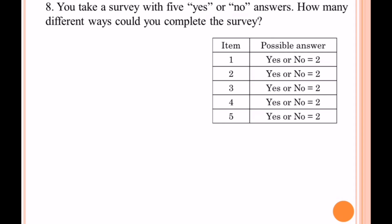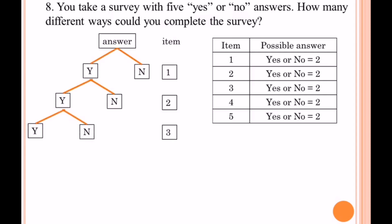Let's express it in a diagram. For item one, the possible answers are yes or no — that's two. On the second item, yes/no branches into yes/no again, giving four. On the third item, each branch splits again: yes no, yes no, yes no, yes no — that is eight.